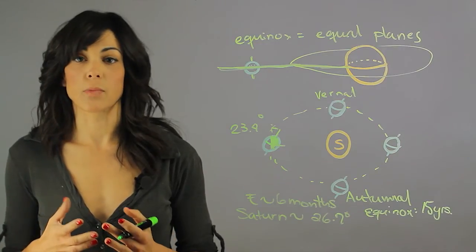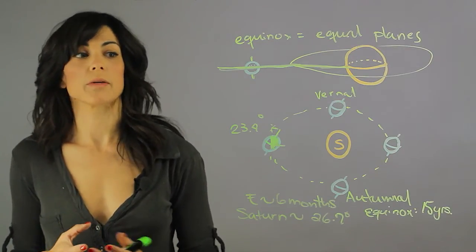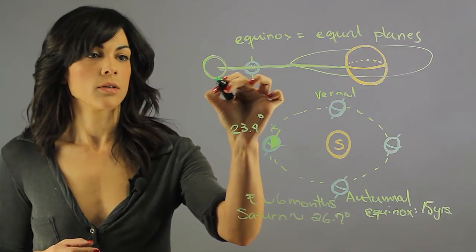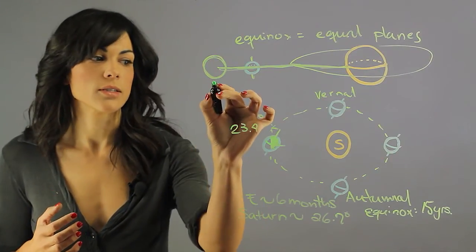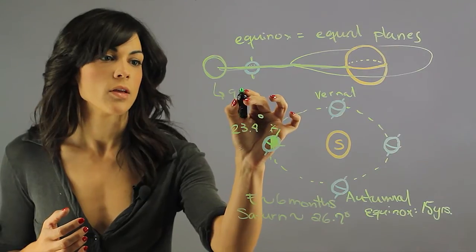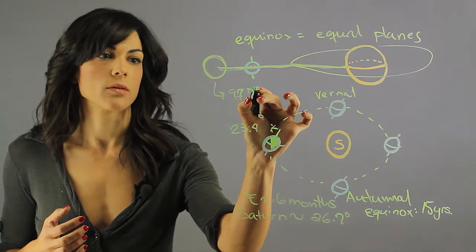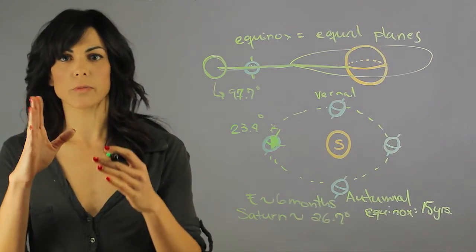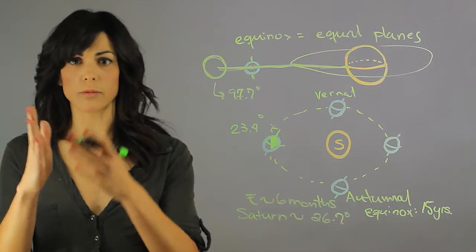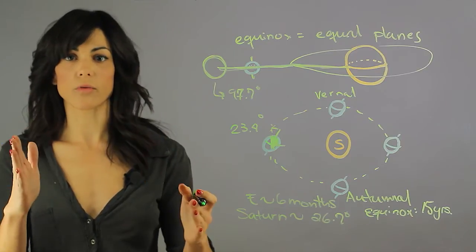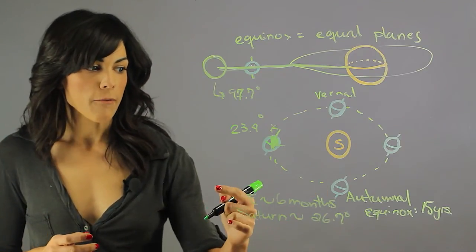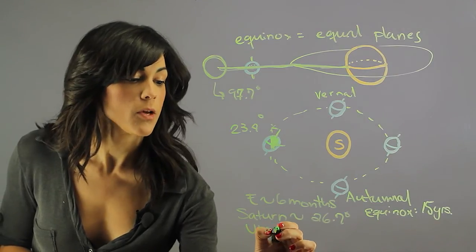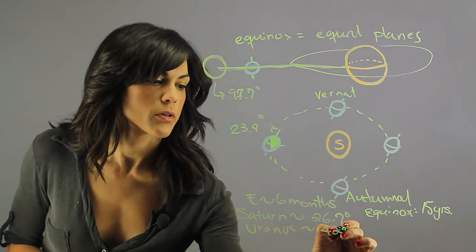Now Uranus is kind of notorious for its orbit, because let's say if Uranus was here, the inclination of Uranus is actually 97.7 degrees, meaning that it's rolling on its side. It's being tilted because it's nearly a right angle from the Sun. So for Uranus, the equinox happens every 42 years.